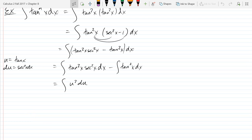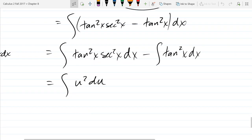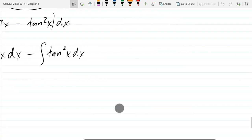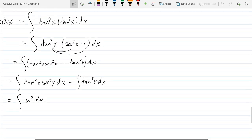All right, so for this we did the first integral, so all we have left is tangent squared antiderivative. So let's do tangent squared x dx separate, I'll do that right over here.